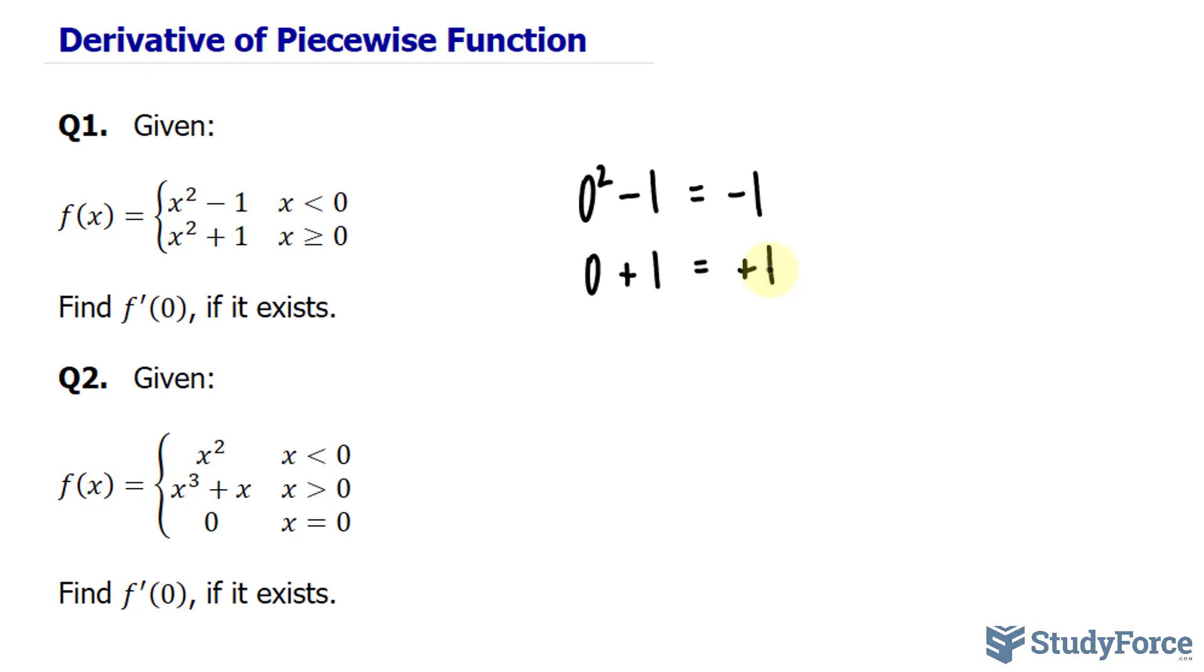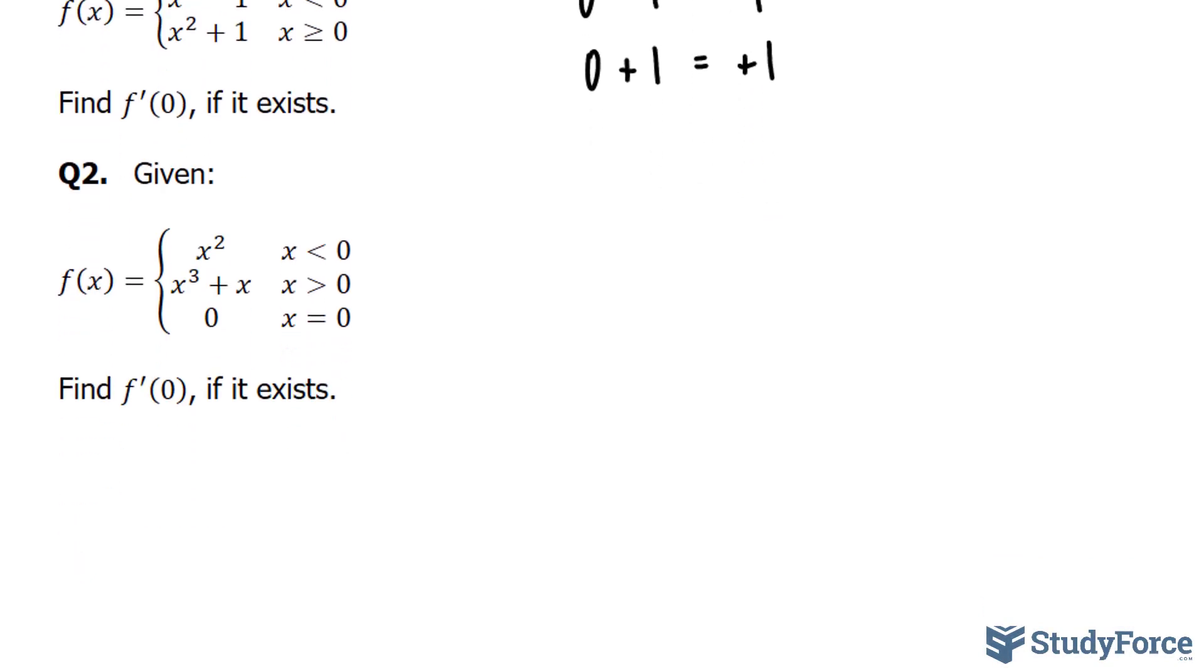Let's move on to question number two. Again the same concept applies. Let's substitute zero into each of these parts. Substituting zero into this part, we end up with zero. Substituting zero into these two terms sums up to zero. And the last part is equal to zero.